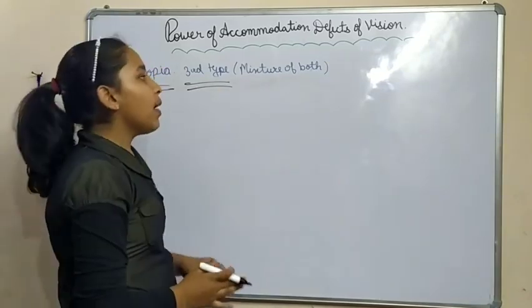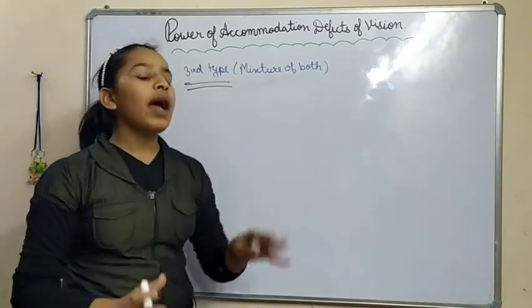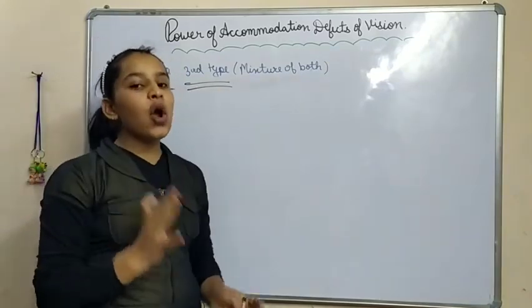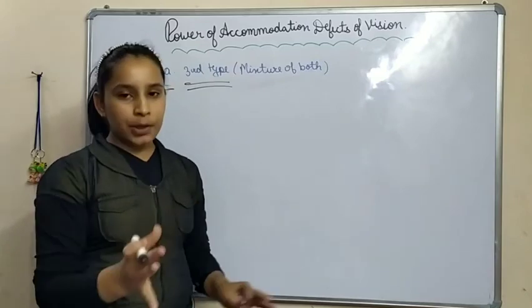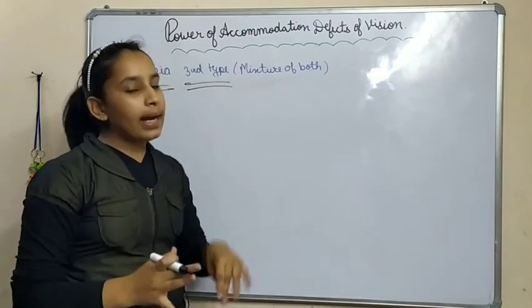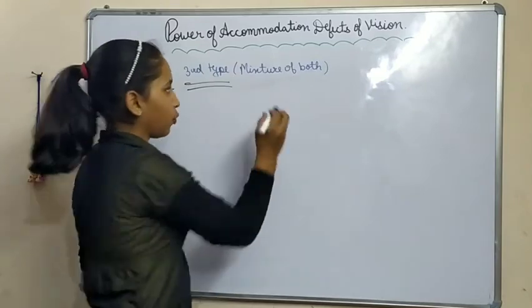The last type of defect of vision is presbyopia. Presbyopia is a mixture of both myopia and hypermetropia.